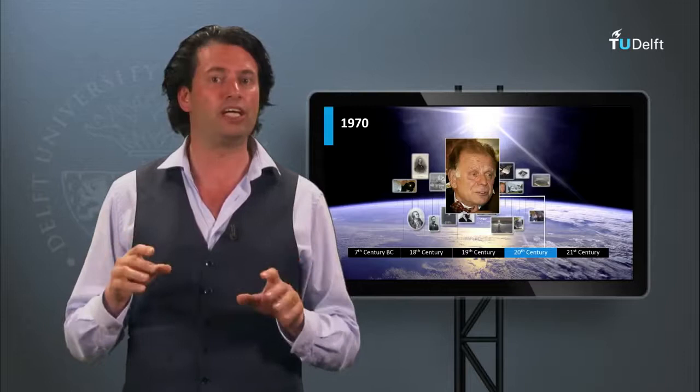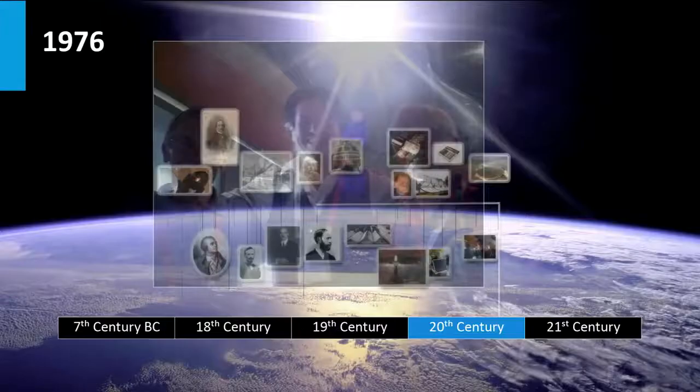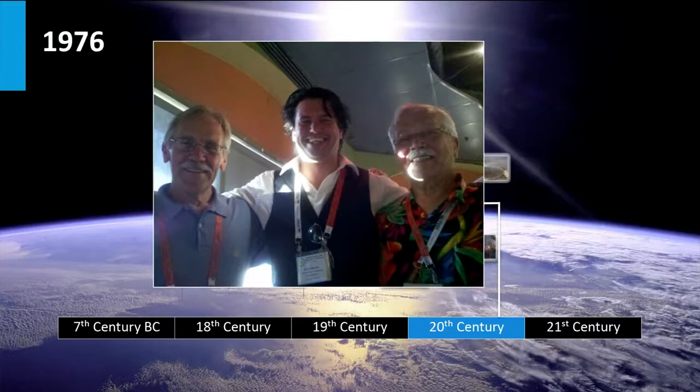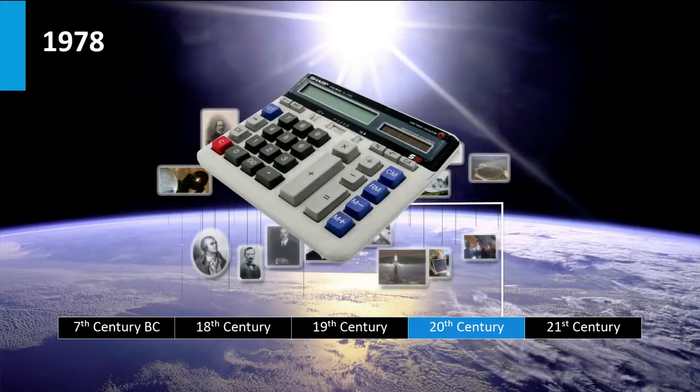At RCA Laboratories, Dave Carlson and Chris Wronski developed in 1976 the first thin film photovoltaic devices based on amorphous silicon. In 1978 in Japan, SHARP and Tokyo Electronic Application Laboratory brought the first solar-powered calculators to market.